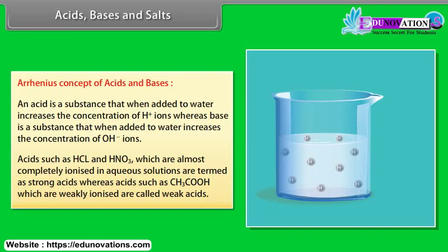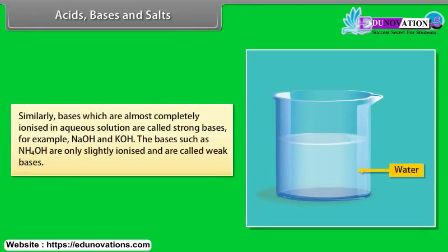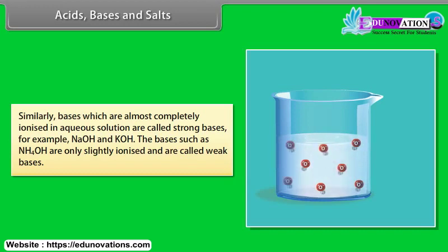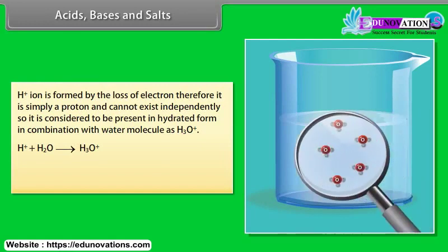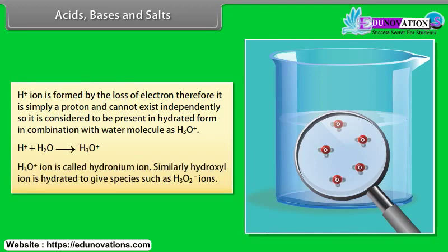Acids such as CH3COOH which are weakly ionized are called weak acids. Bases which are almost completely ionized in aqueous solution are called strong bases, for example NaOH and KOH. Bases such as NH4OH are only slightly ionized and are called weak bases. H+ ion is simply a proton and cannot exist independently, so it is considered present as the hydronium ion H3O+. Similarly, hydroxyl ion is hydrated to give species such as H3O2- ions.